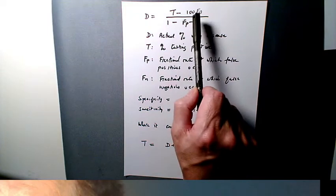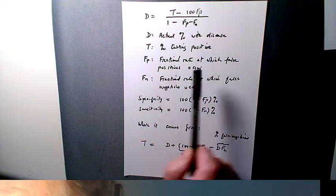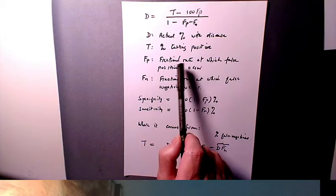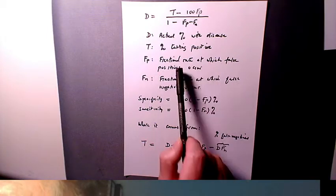Now the other parameters in this, Fp and Fn, are to do with the reliability of the test. Fp is the fractional rate at which false positives occur.